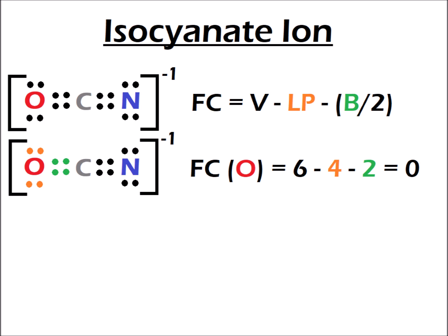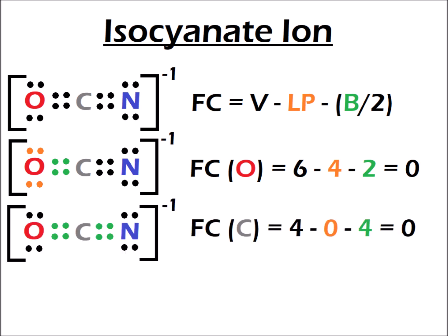In stable molecules, we expect that all atoms will have zero formal charges, or if they have a non-zero formal charge, that the negative formal charges will be on the most electronegative element. For the carbon in the isocyanate ion, carbon has four valence electrons. There are no lone pair electrons around carbon, and there are eight bonding electrons — divided by two gives four. So for the isocyanate ion, the formal charge on carbon is also zero, just like for oxygen.